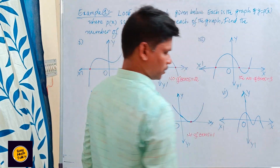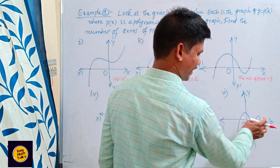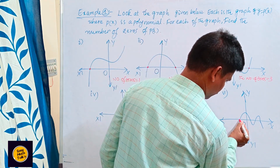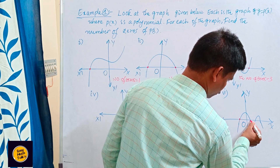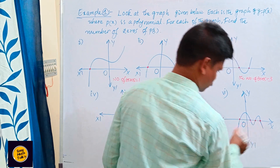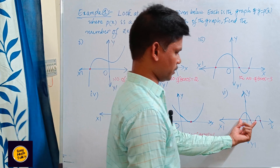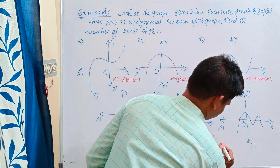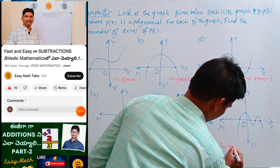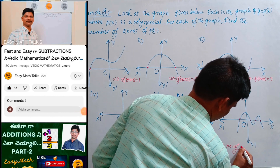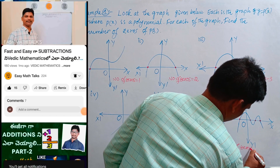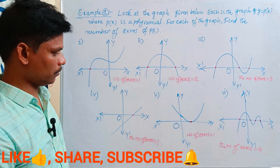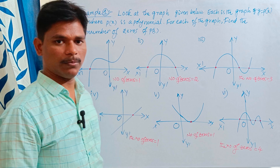See this graph. The graph intersects the x-axis — see how many points intersect: one, two, three, four. Four points intersect on the x-axis. So the number of zeros is equal to four. Okay, so this is the Example 1 method.